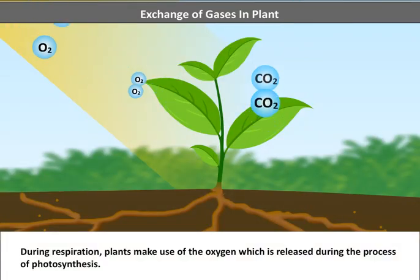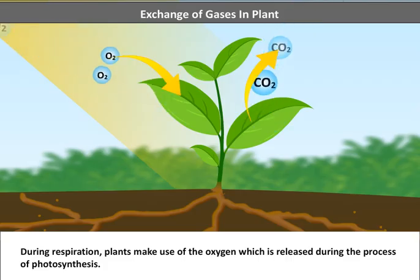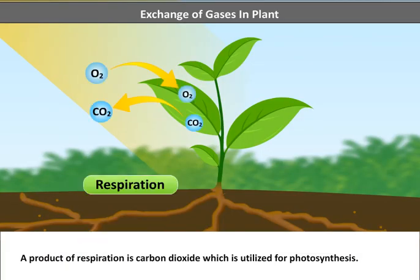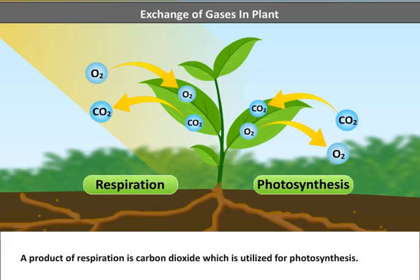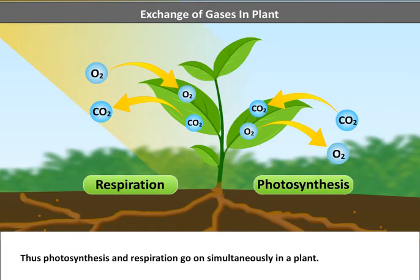During respiration, plants make use of the oxygen which is released during the process of photosynthesis. A product of respiration is carbon dioxide, which is utilized for photosynthesis. Thus, photosynthesis and respiration go on simultaneously in a plant.